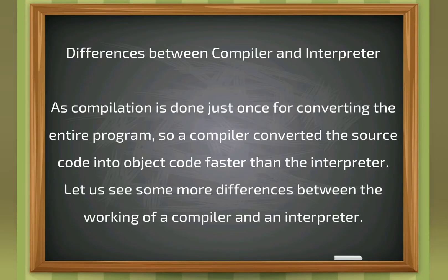Difference between compiler and interpreter: As compilation is done just once for converting the entire program, a compiler converts the source code into object code faster than the interpreter.